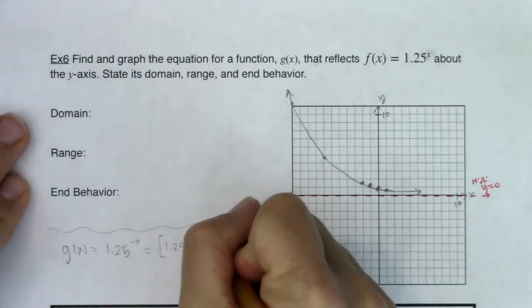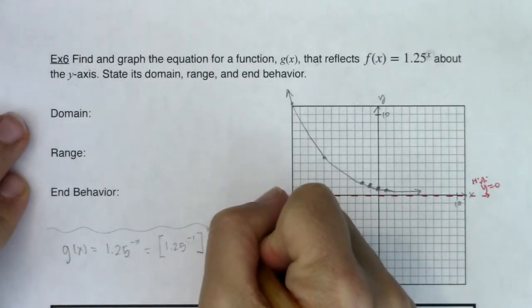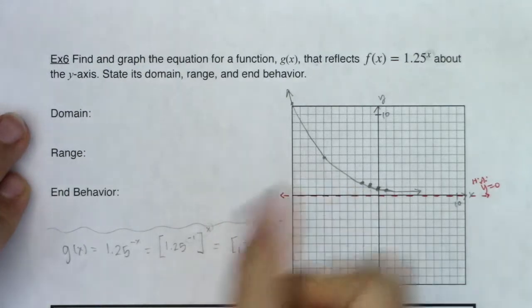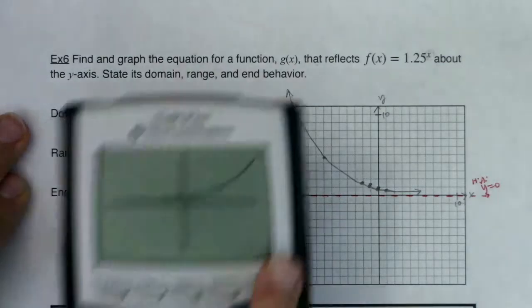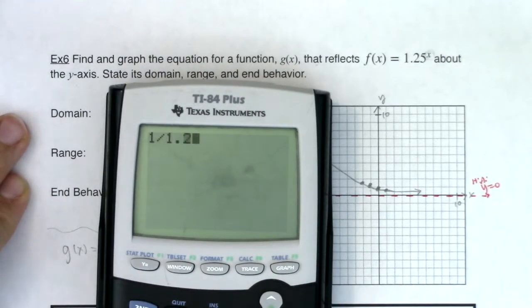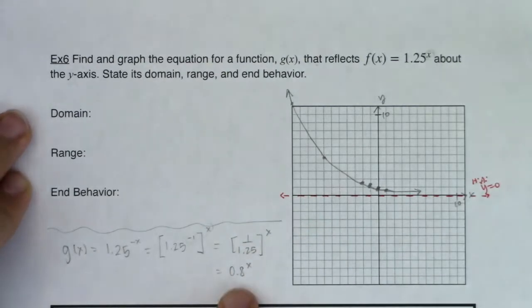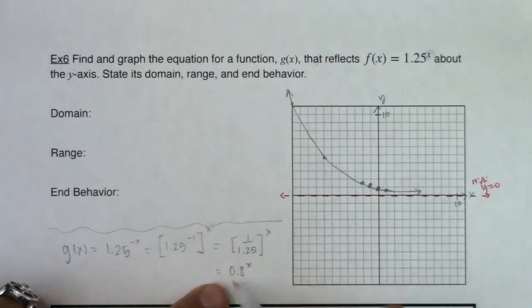But then I want us to think about how I could apply the negative 1 exponent to just 1.25. I could say this was 1 over 1.25, and then all of that raised to the x power. And when I check out what 1 over 1.25 is on my calculator, I'm going to find out it's the decimal 0.8. So this function could also be written as 0.8 to the x. And what shows up better in this version of the function as compared to this one is I can now see it's exponential decay because it's still an exponential function, but my base is a fraction between 0 and 1.